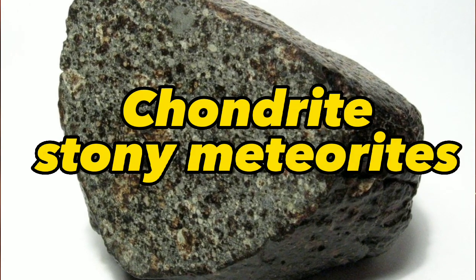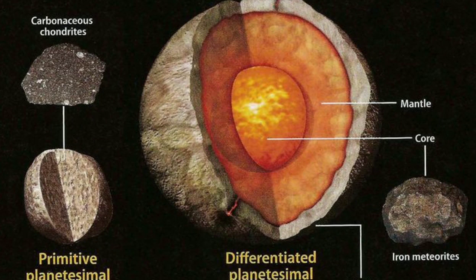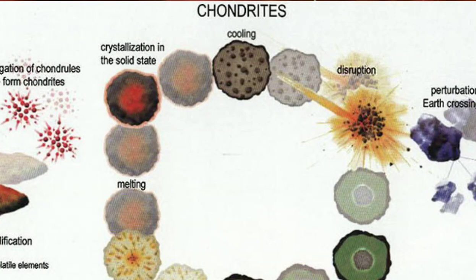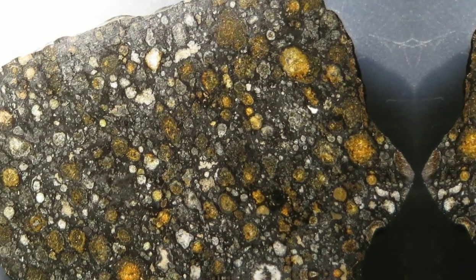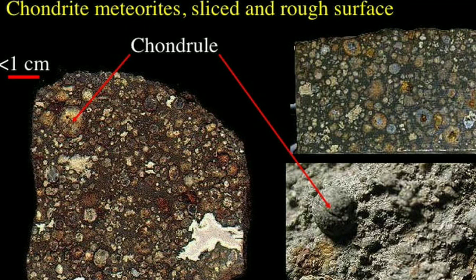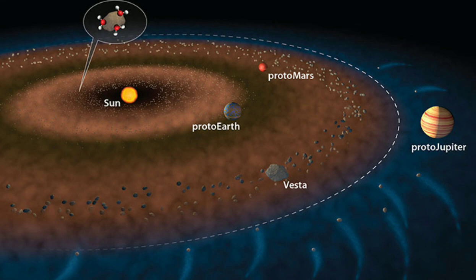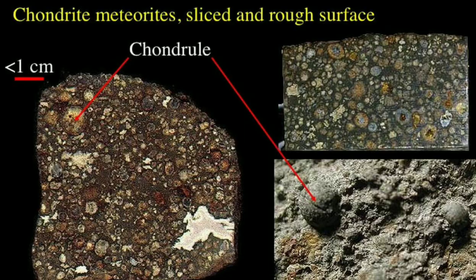At over 4.5 billion years old, chondrites are some of the most primitive and pristine rocks in the solar system and have never been melted. Chondrites have a distinctive appearance, made from droplets of silicate minerals mixed with small grains of sulfides and iron-nickel metal. Their millimeter-sized granules give chondrites their name, from the Greek word 'chondras,' meaning sand grains. There are many varieties of chondrite, with differences in mineralogy relating to the type of asteroid the meteorite came from.